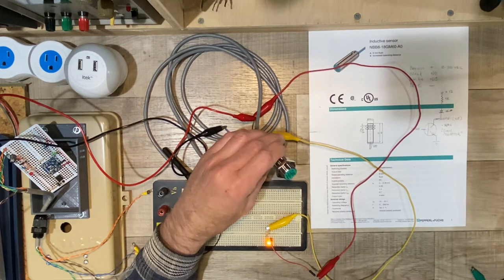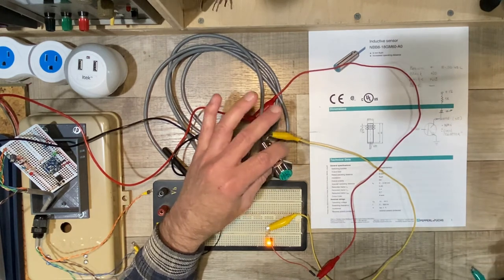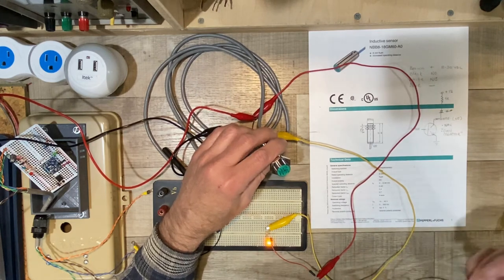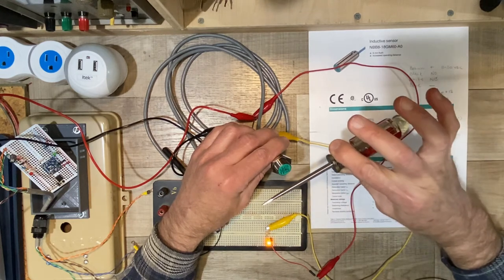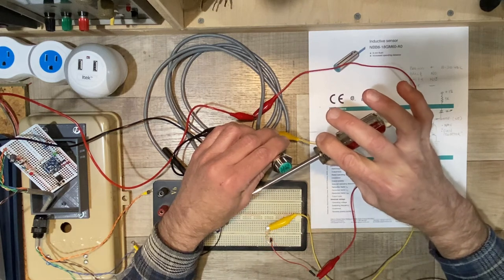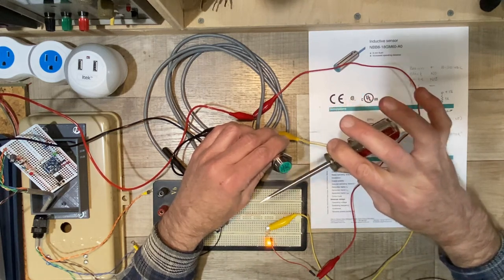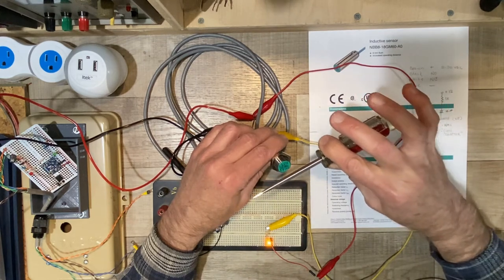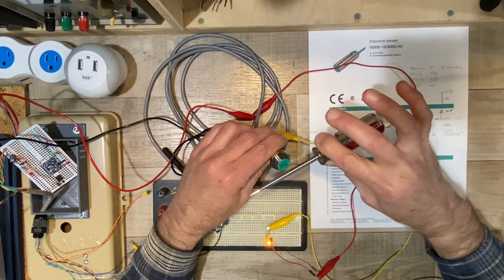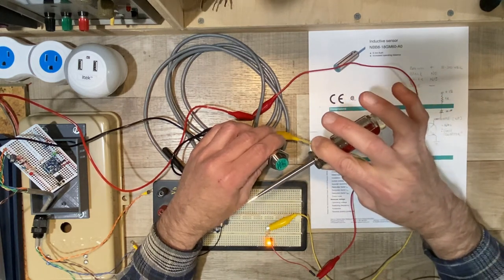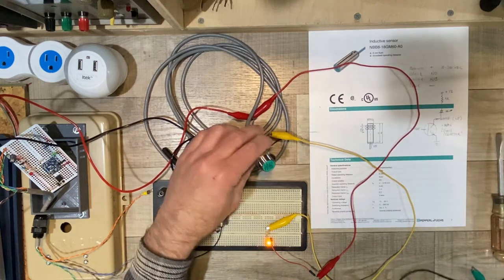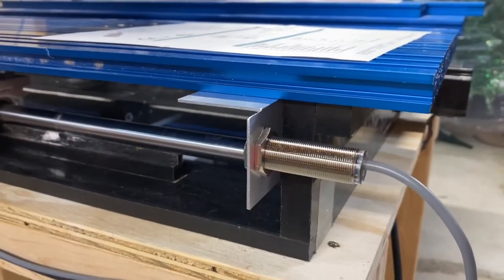So having powered up the sensor, you can see that the normally closed or on in the resting state output is on. The LED is turned on. When I bring a metallic object close to the sensor, I hope you're going to see that lo and behold, the LED goes off. So this is the signal that's going to be provided to the G540, much like the clicky switch signal in the last episode that's going to tell the G540 that the y-axis has moved close to the end of its travel.